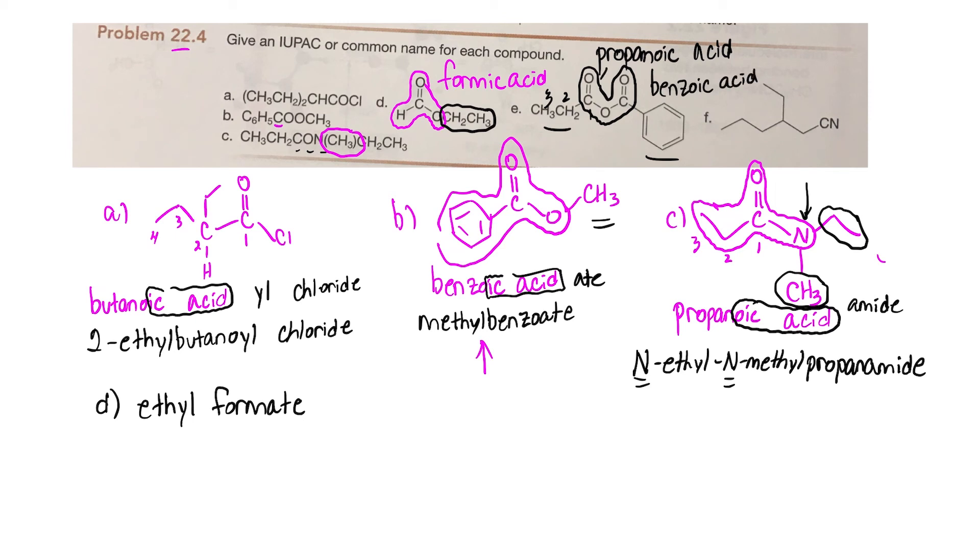And on the left we have benzoic acid. Now we want to alphabetize the name, so it's going to be benzoic and then propanoic, and then we add anhydride at the end of the name there.